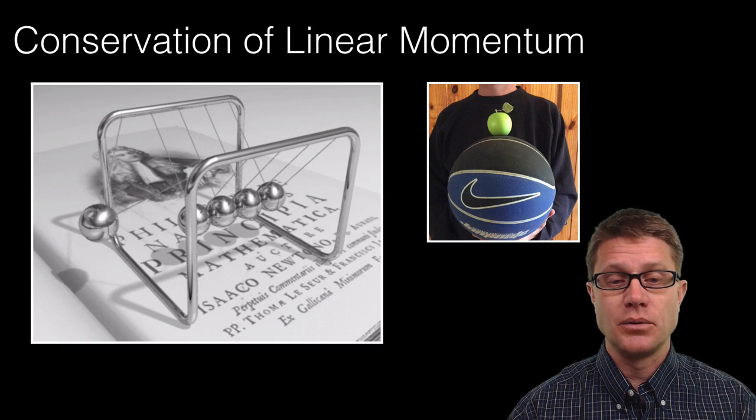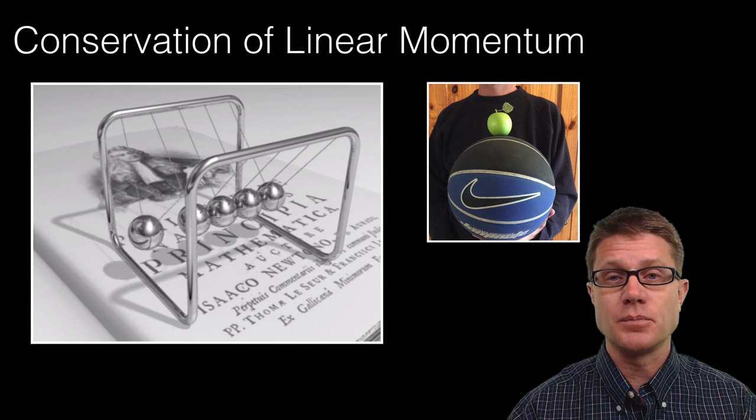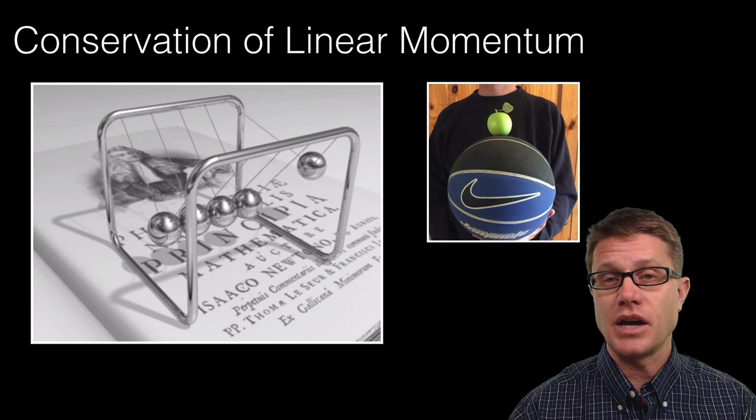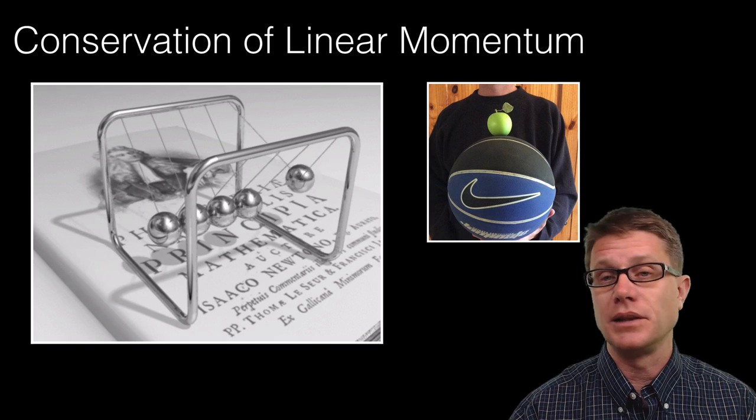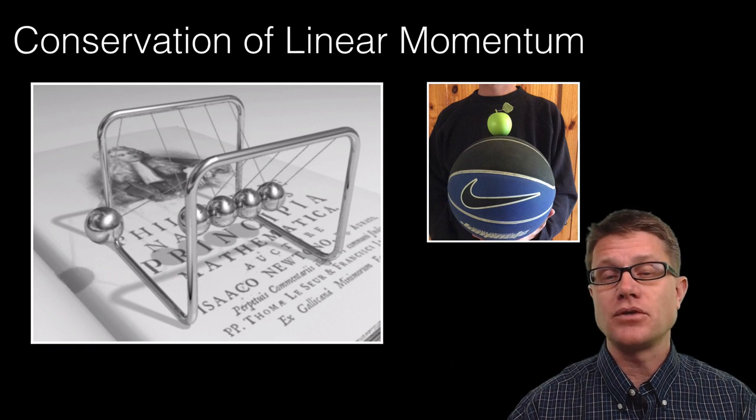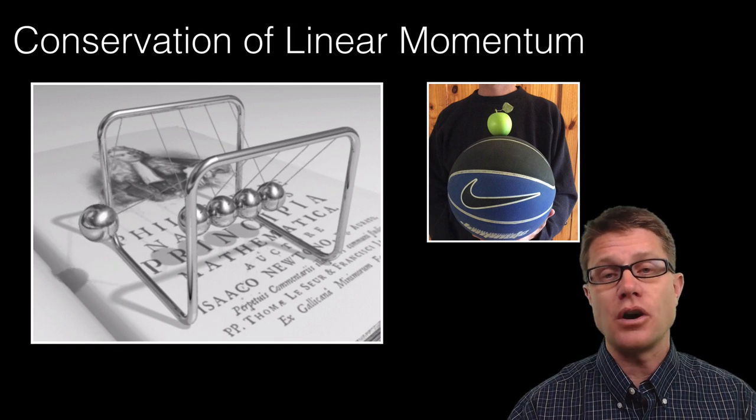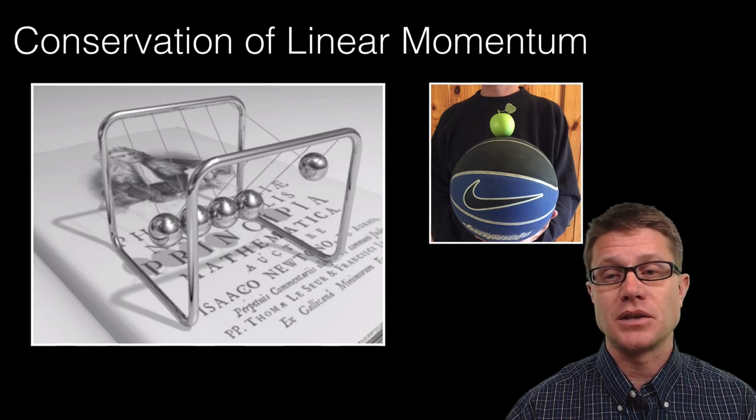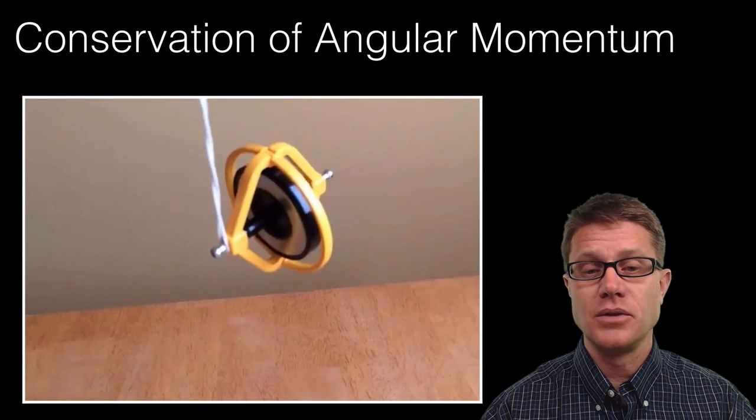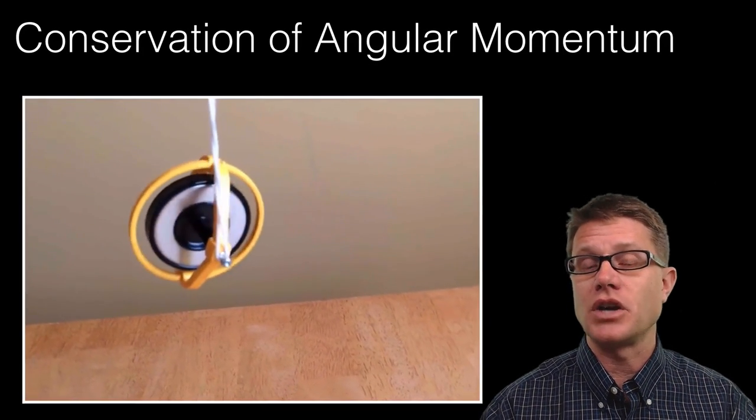Same thing applies to momentum. And so in this famous Newton's cradle, what's being transferred between each side of that swinging pendulum is going to be linear momentum. And same thing when I drop the basketball, we're transferring some of that momentum of the basketball into the apple. But total amount of linear momentum is conserved. And the same thing applies to the angular momentum of this gyroscope.